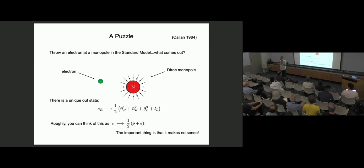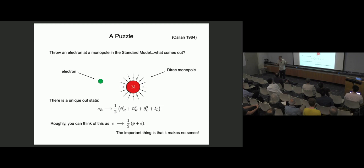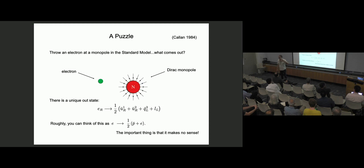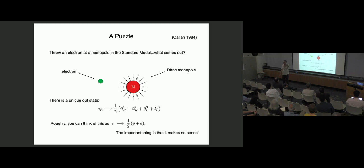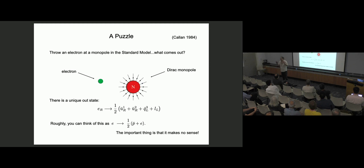The puzzle was first pointed out by Callan in 1984 in the context of the standard model — not the simplest context in which to explain this, but this is where it first appeared. Suppose that we actually discover a magnetic monopole in our world. Throw an electron at it. The puzzle comes at reasonably high energies: you should ignore confinement, think about quarks being free at short distances, and ignore electroweak symmetry breaking — so be at distances smaller than an inverse TeV scale where all fermions are more or less massless.